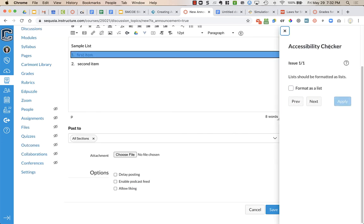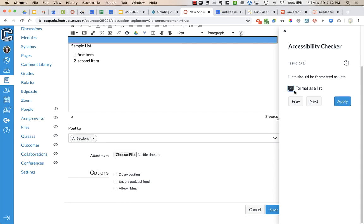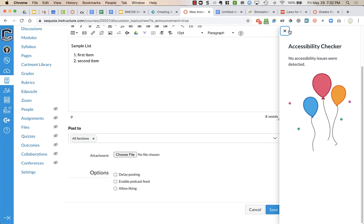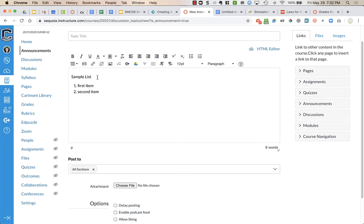And it has the accessibility checker, and it says that there is one out of one issues. It says list should be formatted as list. All I have to do is click on the box right here, and click apply, and it fixed my page. So now my list is accessible for screen readers.